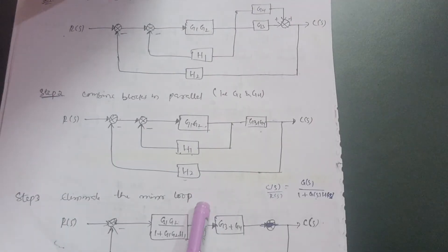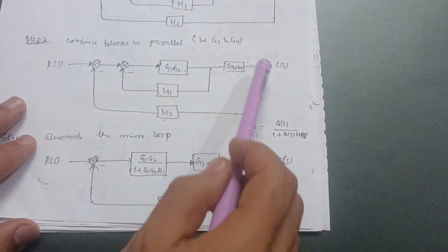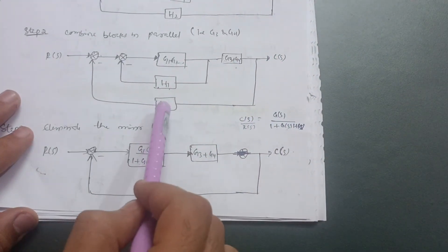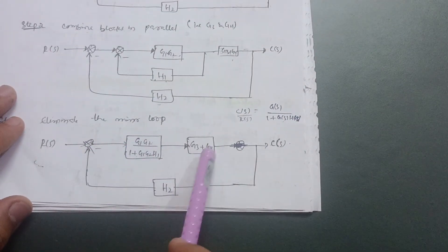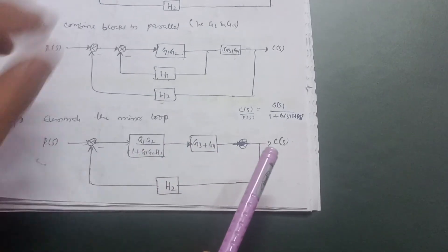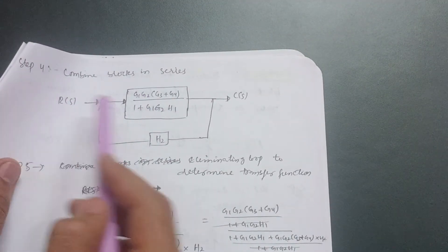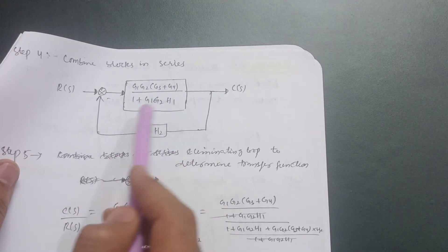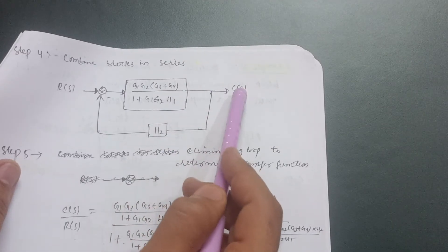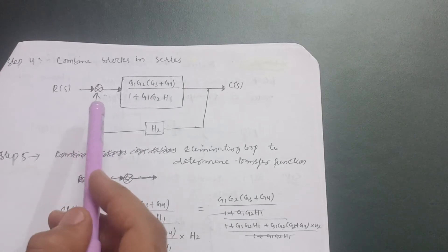G3+G4 will remain the same, C(s) is as it is, and H2 remains as the feedback. This is your diagram now. Observing here, these two blocks are in series, so you can combine them by multiplying. Step four — combine blocks in series — gives: G1G2(G3+G4) / (1 + G1G2·H1). This is the forward path, with one feedback path H2 remaining.